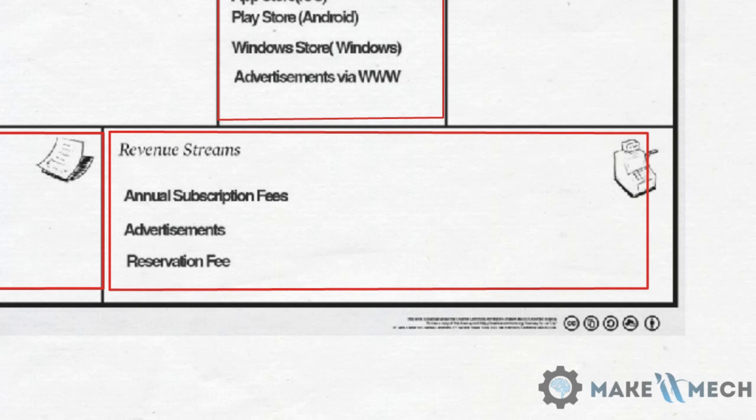The last section is revenue streams — how you are going to generate money. Describe how you will earn revenue from your value propositions. There are several types: recurring-based, one-time payments, asset sales, usage fees, licensing fees, advertising, etc.